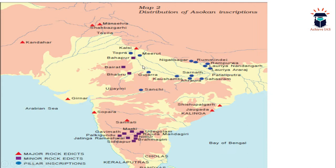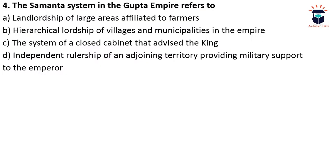Pillar inscriptions are also very important. They are found at Topra, Sanchi, Meerut, Rummindei, Rampurva, Lauriya Nandangarh, Lauriya Araraj, Patali, Shahsaram, Arora, Sarnath, Kaushambi, and Gujarat. These are the key places where Ashokan inscriptions have been found. Now let's move on to the next question.